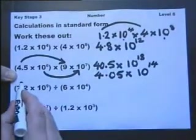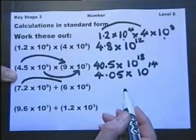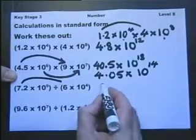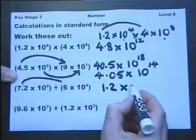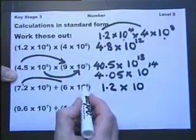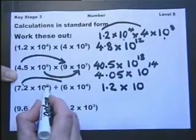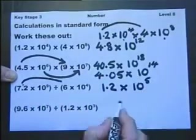Now let's do this division. 7.2 divided by 6: 6 into 7 goes 1, 6 into 12 goes 2. So that's 1.2 multiplied by 10 to the power of... We're going to subtract the indices because we're doing 10^9 divided by 10^4, and therefore we subtract the indices.